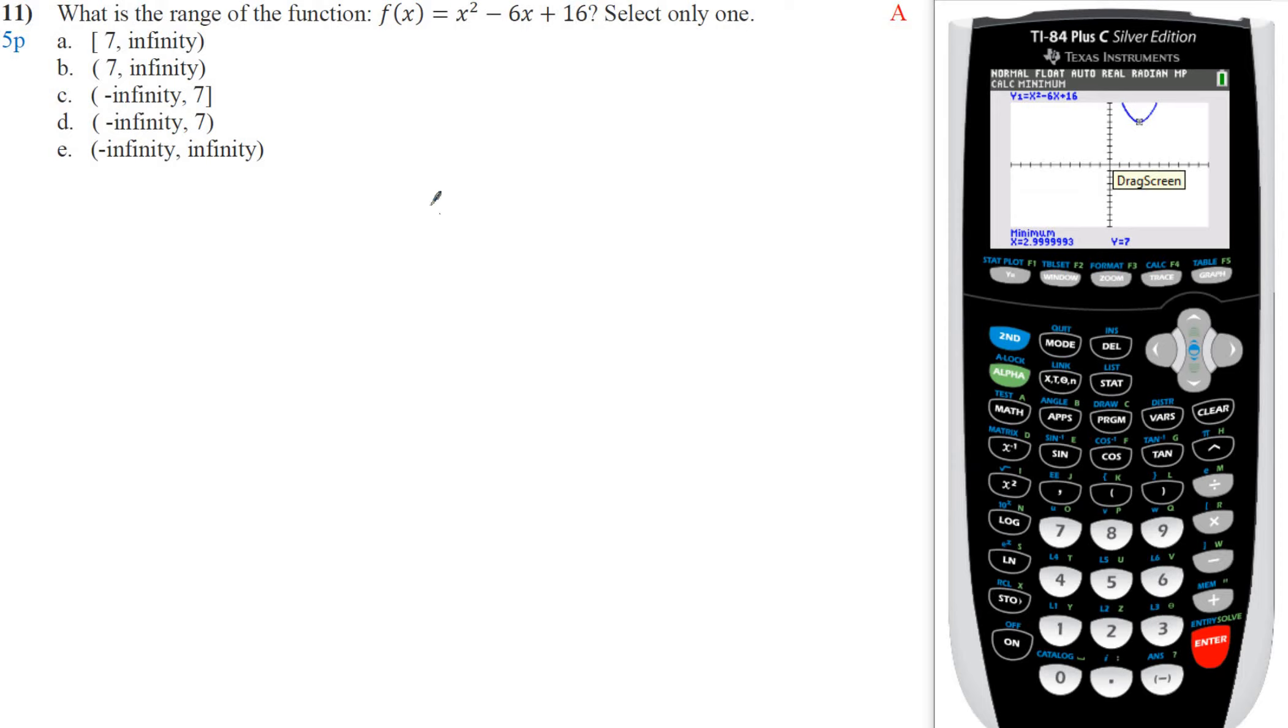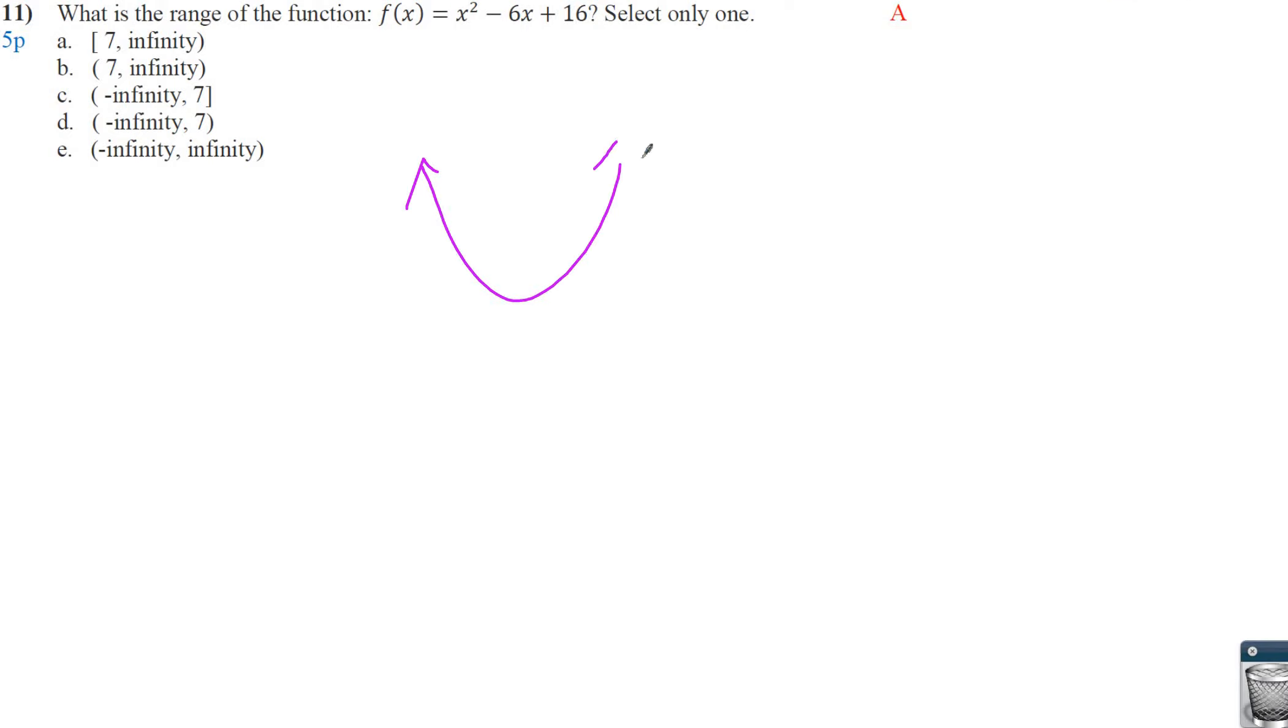So that means our parabola is, we're looking at the range. The range is up and down. So this is negative infinity, infinity. We're going from when this y point was 7, and up. So 7 towards infinity. Make sure you know how to write this.